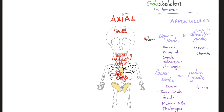In the lower extremities, start with the girdle that's holding it in place — the lovely hip bone — holding the femur, then tibia and fibula. Instead of carpals, say tarsals. Instead of metacarpals, say metatarsals. And instead of phalanges — well, there's no instead — there are also phalanges.